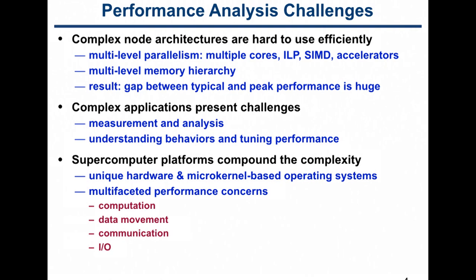Some of the challenges for performance analysis are that these architectures have very complex nodes. You have multiple levels of parallelism: multiple cores, instruction-level parallelism inside each core, and SIMD parallelism with short vector units. On systems like Titan or the emerging Summit system at Oak Ridge or Sierra at Livermore, you have accelerators. There's also a multi-level memory hierarchy — memory is about 300 cycles away and cache is just a few cycles away. If you're not making the most of the memory hierarchy, you're running at the speed of main memory, which is much slower than the processors.